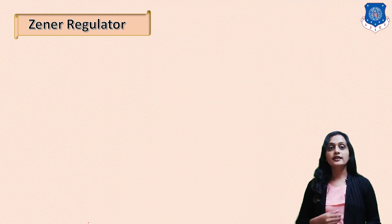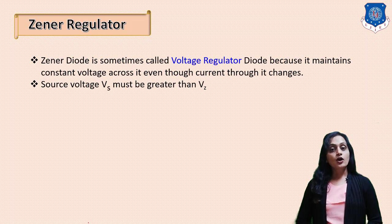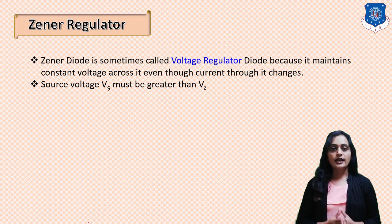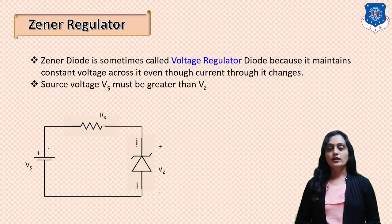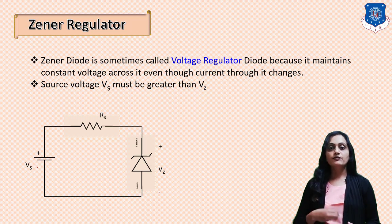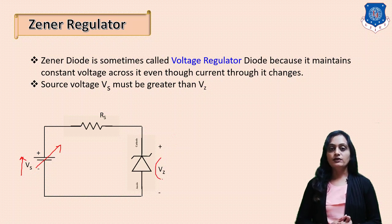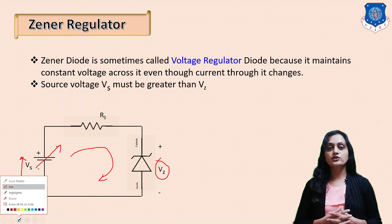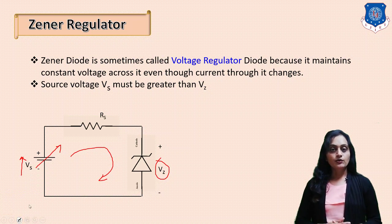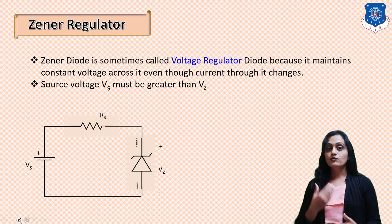Now we will see the Zener diode as a voltage regulator. The Zener diode is sometimes also called the voltage regulator diode because it keeps the voltage across it constant while the current through it varies. In the circuit, the DC power supply, resistor, and Zener diode are connected in series. If we increase the battery voltage, the voltage across the Zener diode remains constant at VZ but the current through the Zener diode increases. That is why it is called the voltage regulator — it regulates and keeps the voltage across it constant.